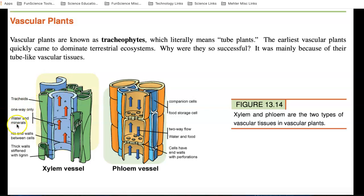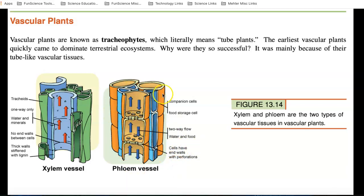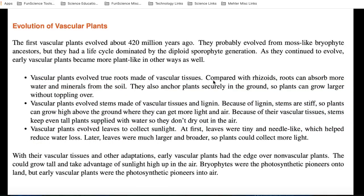Notice it says, one way only, waters and minerals, no end walls between the cells. However, phloem can move it in two directions. They have end walls with perforations. That's these over here. And they have companion cells. So, they're very different. Xylem is a little simpler. Phloem, a little more complicated. But these are the tubes, the two types of tubes that are in vascular plants.